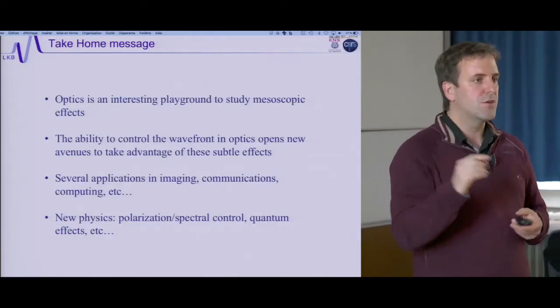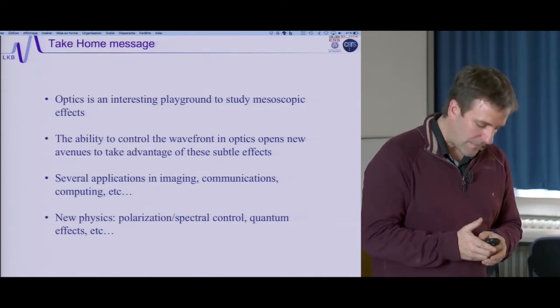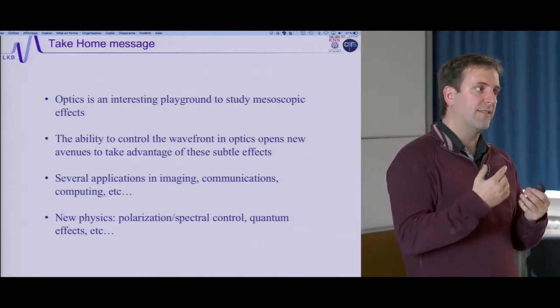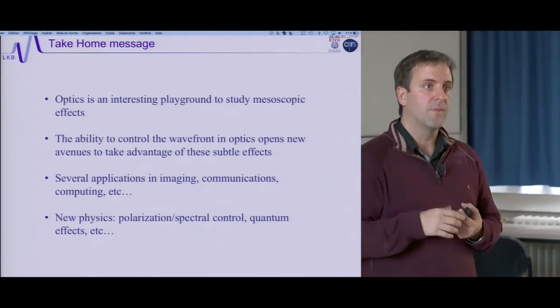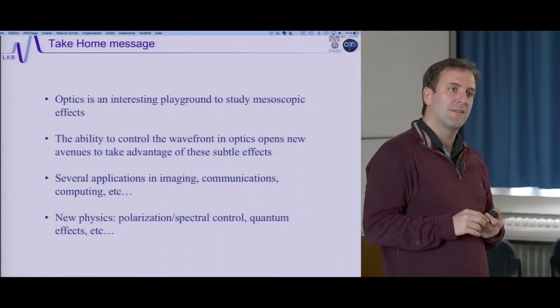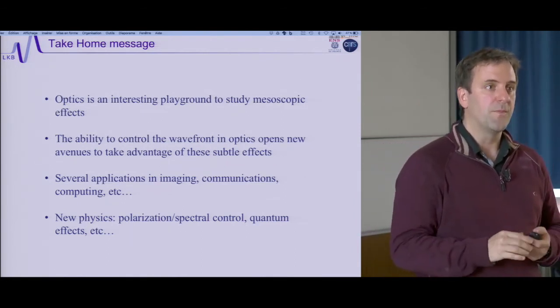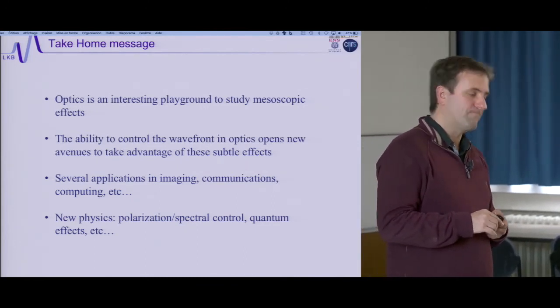When we measured the memory effect in tissues, because the tissues are anisotropic — very forward scattering — we saw much more memory effect than expected from purely diffusive theory. This is actually good news because it means that even for thick tissue, you have a hope of having enough memory effect to do imaging in depth, which purely mesoscopic theory would say is impossible. Thank you very much. Let's thank Sylvain again.